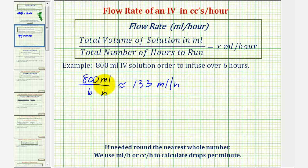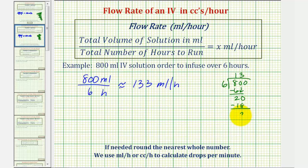To perform this division by hand, we would have 800 divided by six. There's one six in eight. One times six is six, and this difference is two. We bring down the zero — there are three sixes in 20. Three times six is 18. We subtract, this difference is two. Bring down the last digit of zero. There are three sixes in 20 again. Three times six is 18, and we subtract. The remainder is two.